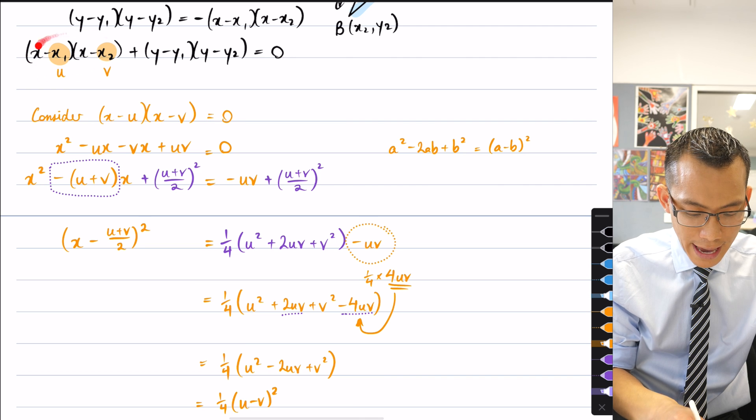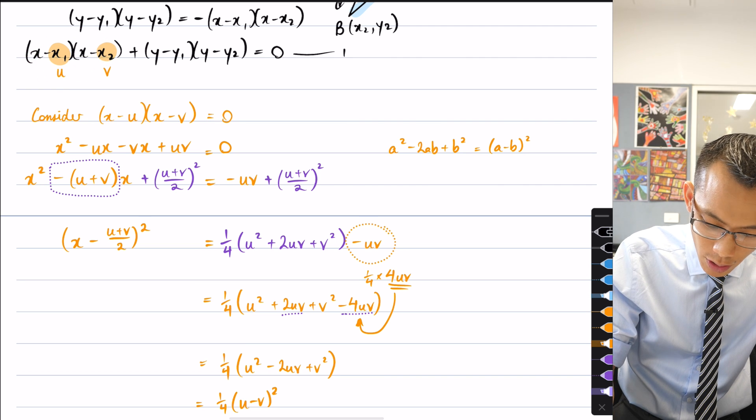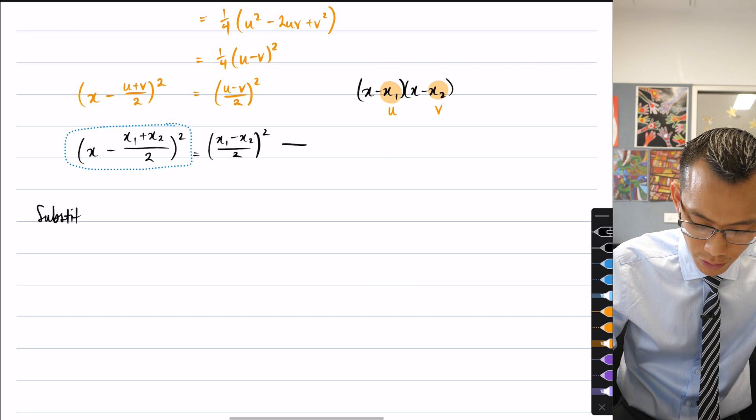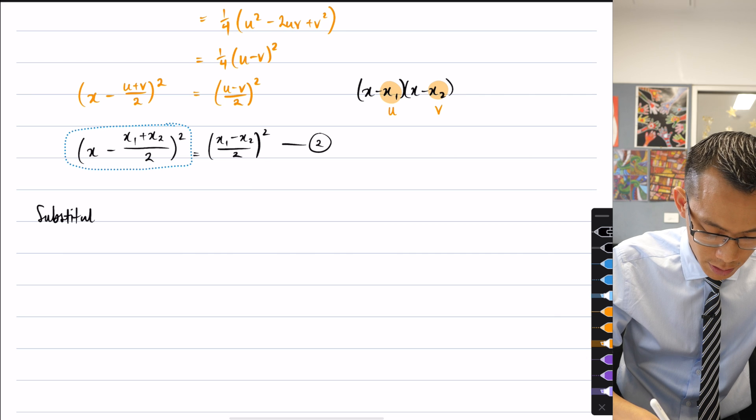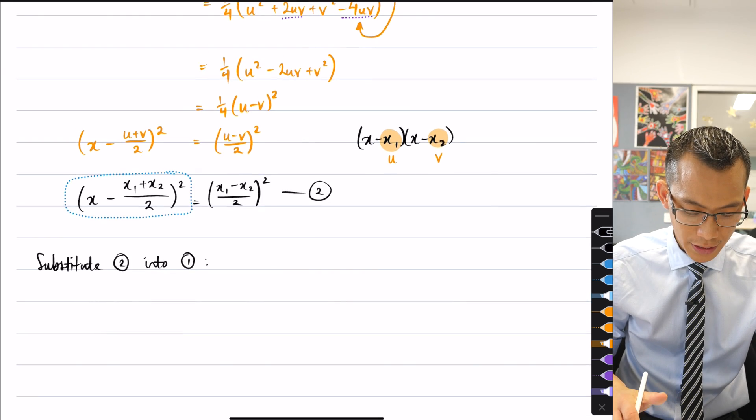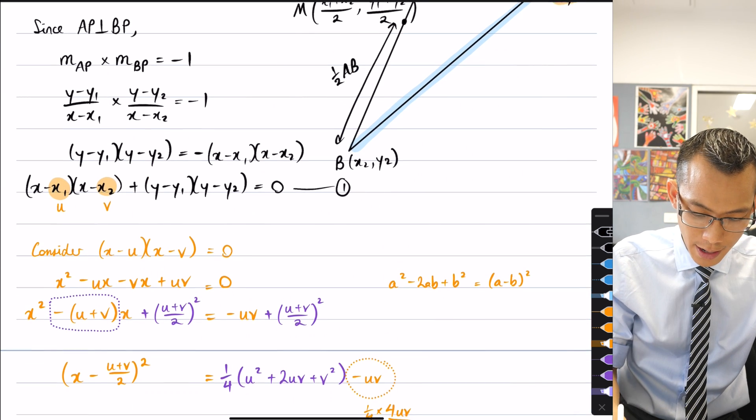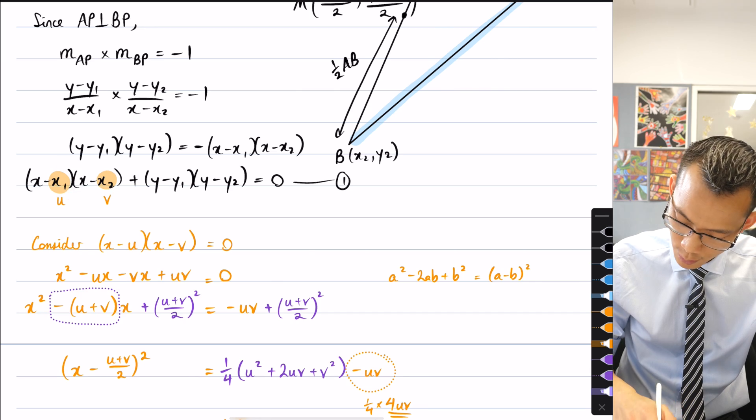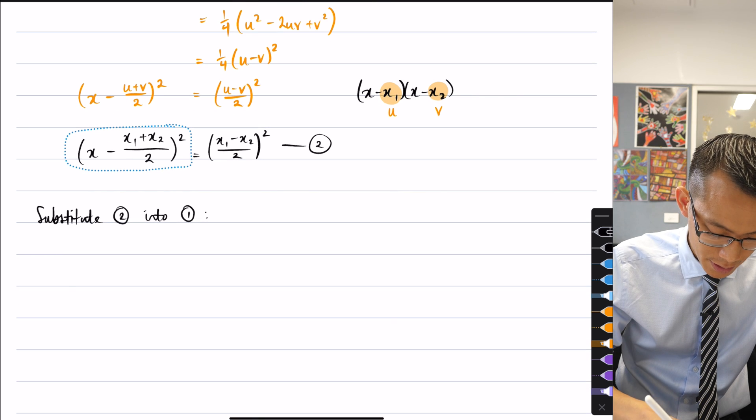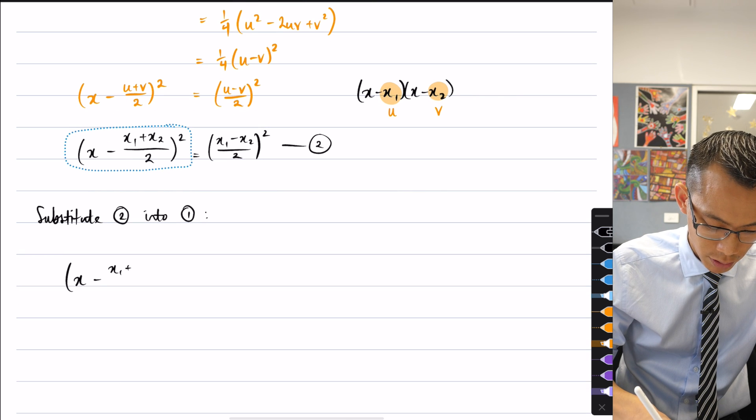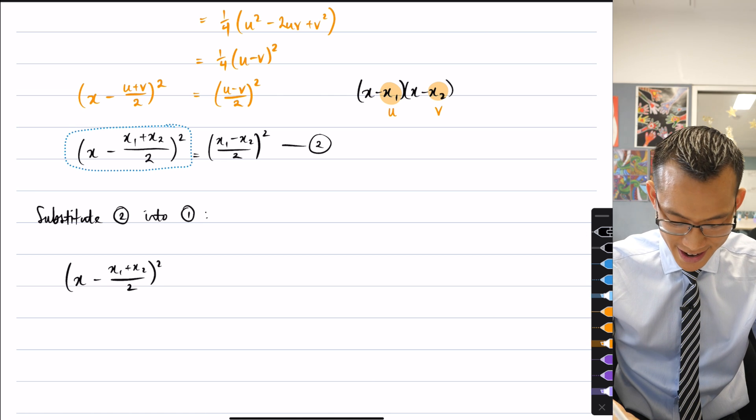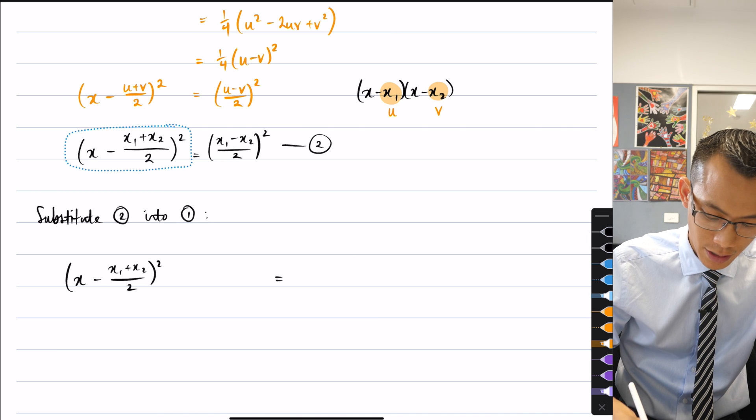So if I call this equation 1, if I substitute this result, substitute, let's call this 2, substitute 2 into 1, what have I got here? Well, the left hand side, these x parts here, these x parts here, which I didn't need to go up, it's just this part here, turns into this. So I can just write all of that out. I can go x, take away x1 plus x2 over 2 all squared. On the right hand side of the equation, I'll leave a bit of space here. I'm going to end up with this.